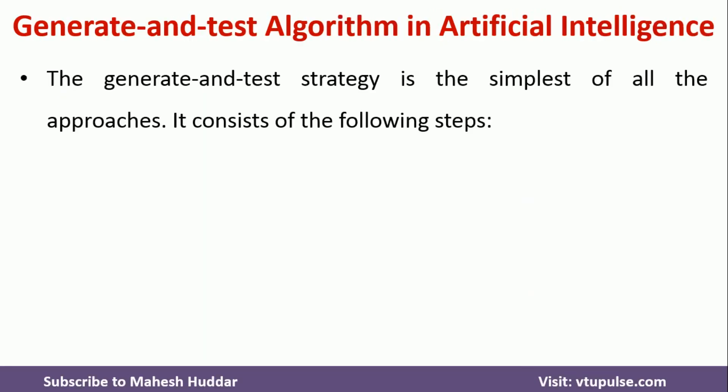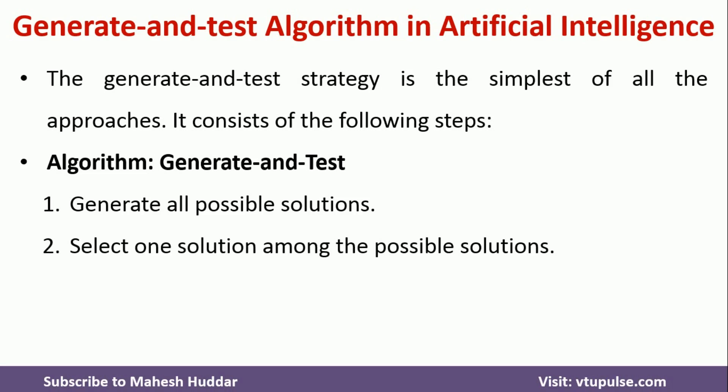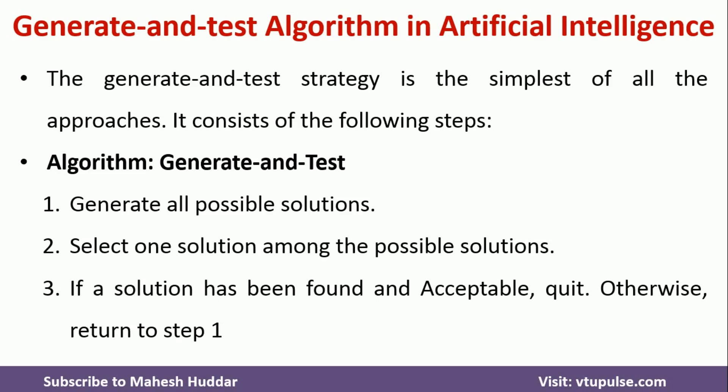The generate and test search algorithm is one of the simplest of all the search techniques. It contains the following steps. In the first step, we need to generate all possible solutions. Once you generate all possible solutions, we need to select one solution among them and then check whether the solution is acceptable. If it is acceptable, we will quit the algorithm. Otherwise, we will go back and select the next one and check whether it is acceptable or not.